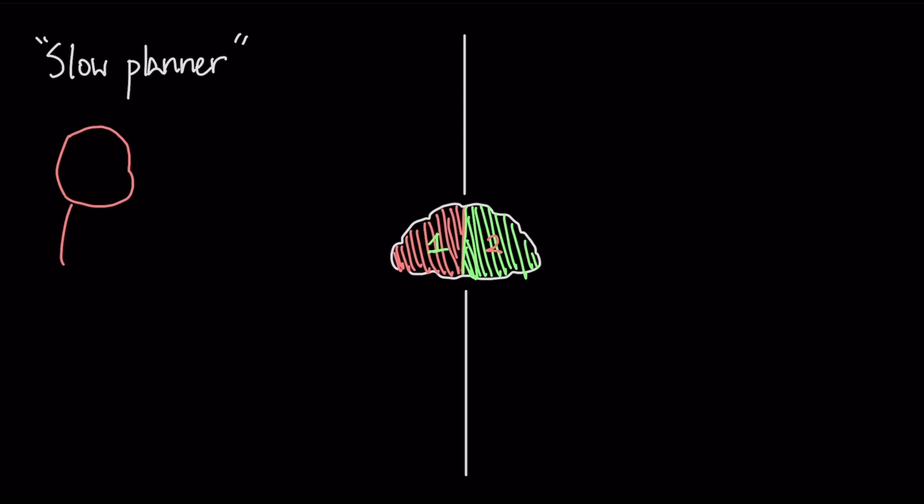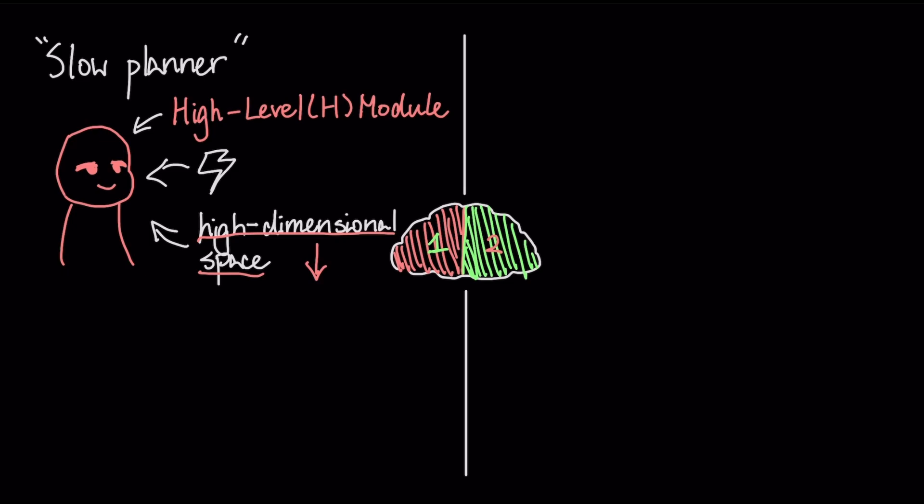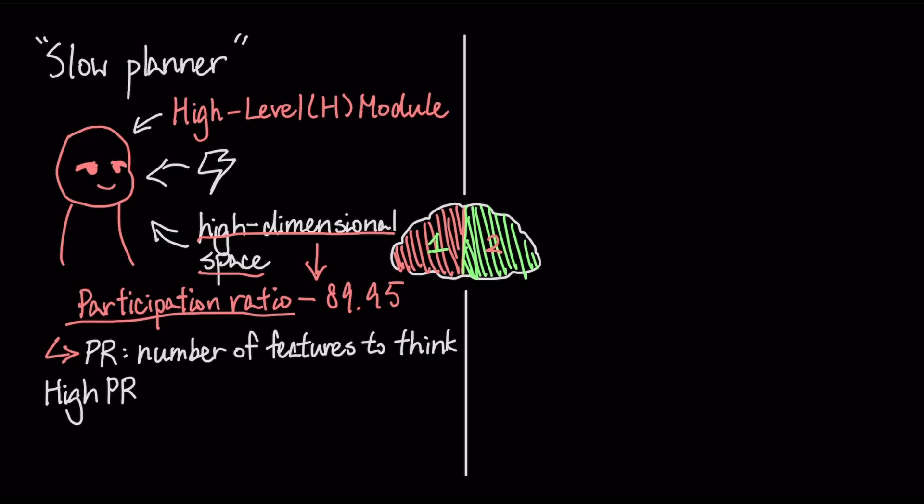The first is a slow planner, the high-level H module, which handles abstract strategy and learns to operate in a high dimensional space with a participation ratio of 89.95. The participation ratio essentially measures how many different computational features the module is using to think. A high PR is essential for cognitive flexibility and handling a wide variety of tasks, like a generalist thinker.